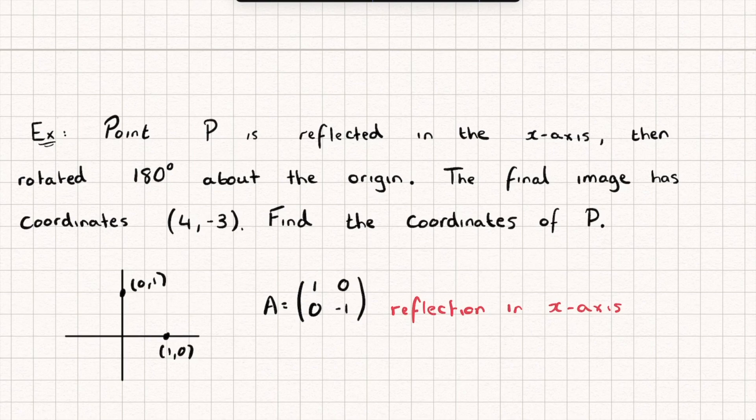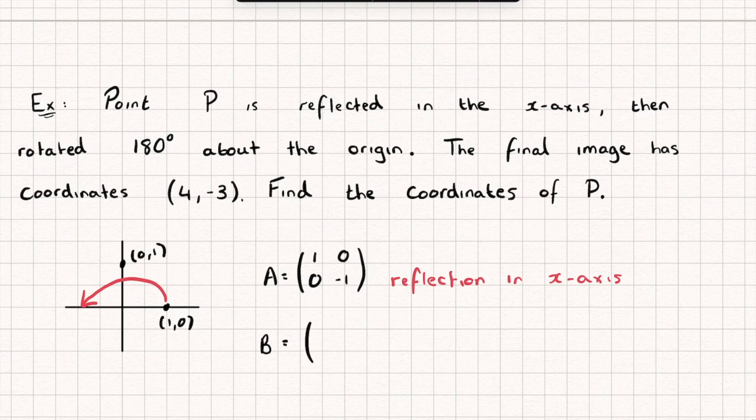We now need to find the second transformation which is B and that is a rotation 180 degrees about the origin. So my point 1, 0 is going to end up over here that's going to become the point negative 1, 0 and the point 0, negative 1 is going to go all the way over there and that's going to become the point 0, negative 1. That's my rotation 180 degrees.